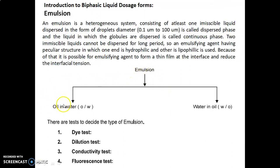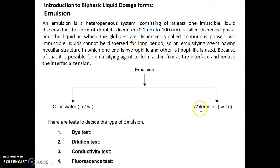The simple classification of emulsion is oil in water (O/W type) and water in oil (W/O type). In O/W type, oil is the internal phase while water acts as the external phase. In W/O type, water is the internal phase while oil is the external phase. There are tests to decide the type of emulsion.